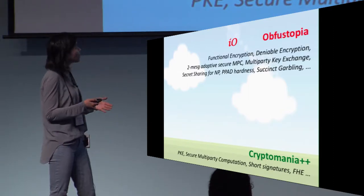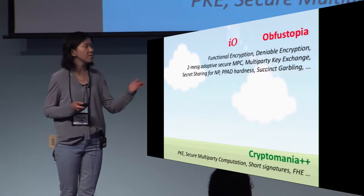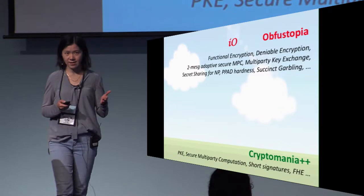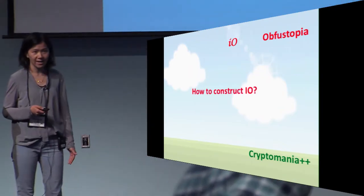Furthermore, it seems to have created a new world of obfustopia where there are many even more powerful tools like functional encryption, succinct garbling of Turing machines, etc. So a central question is how can we construct IO?